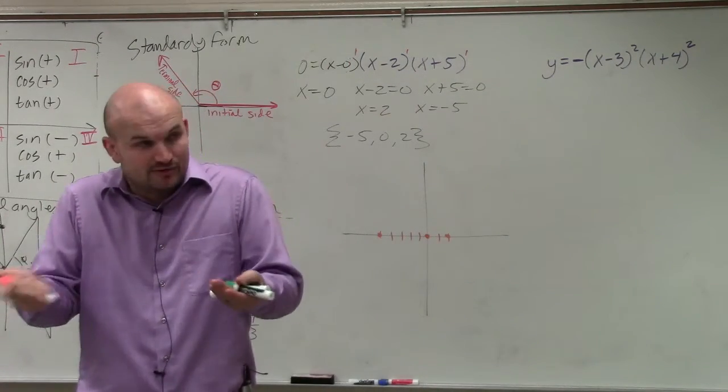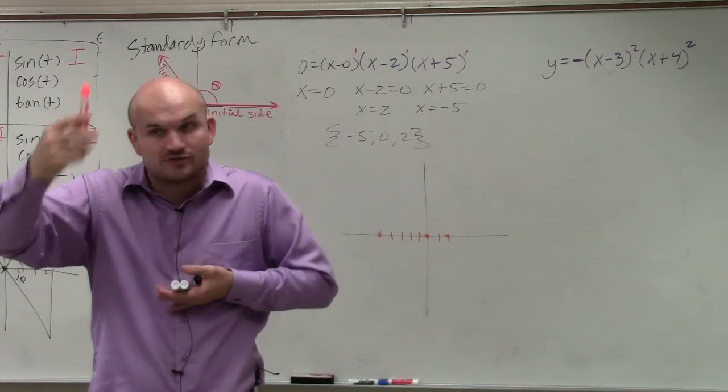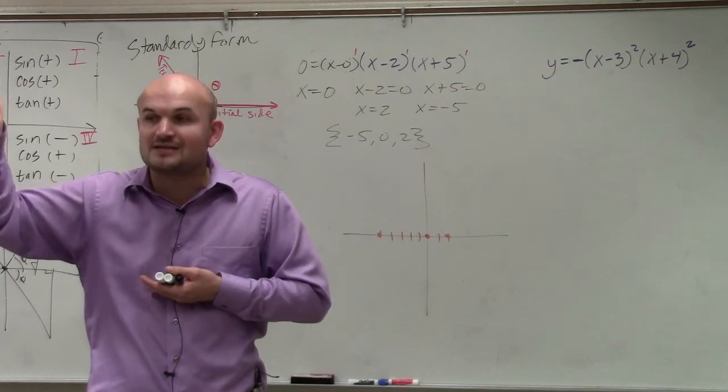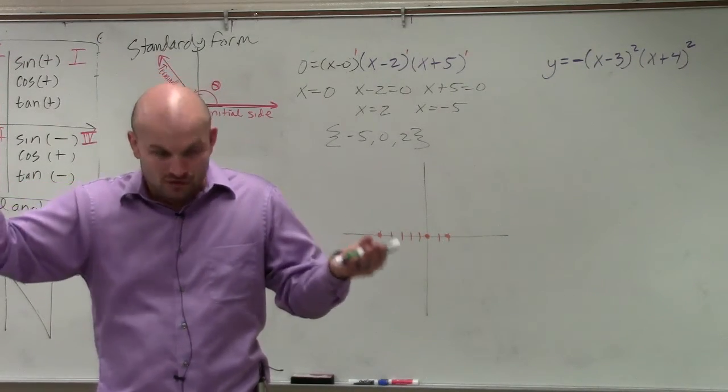So if the multiplicity, which is the orange, right, what the factor is raised to, the multiplicity is odd, what does that tell us about each of those zeros? Does it cross or bounce? Cross.